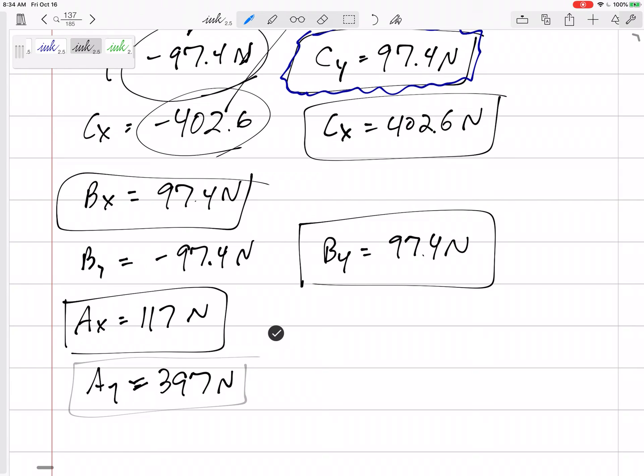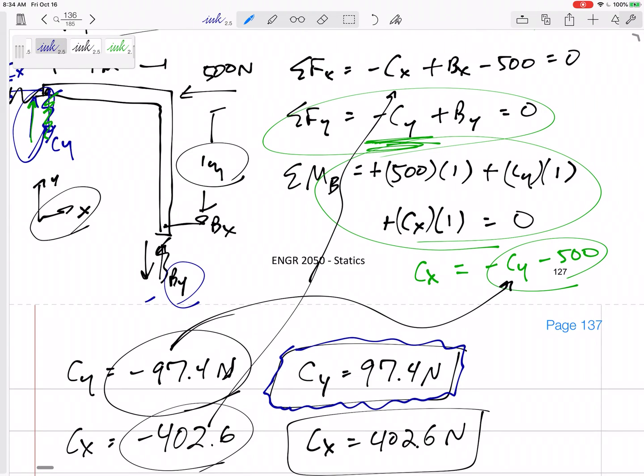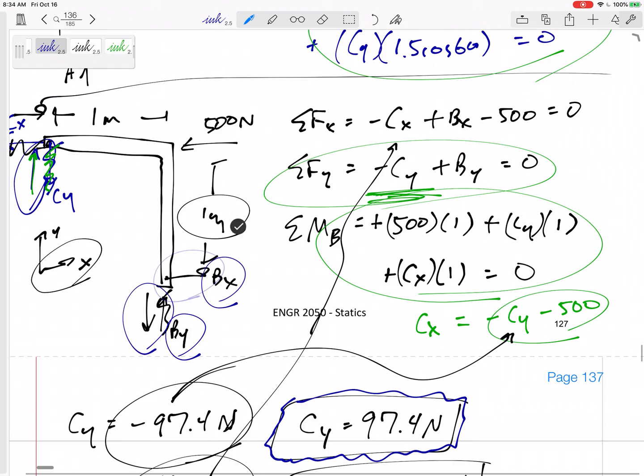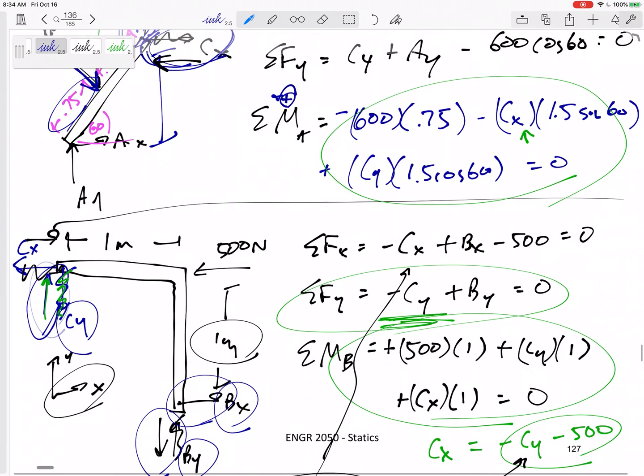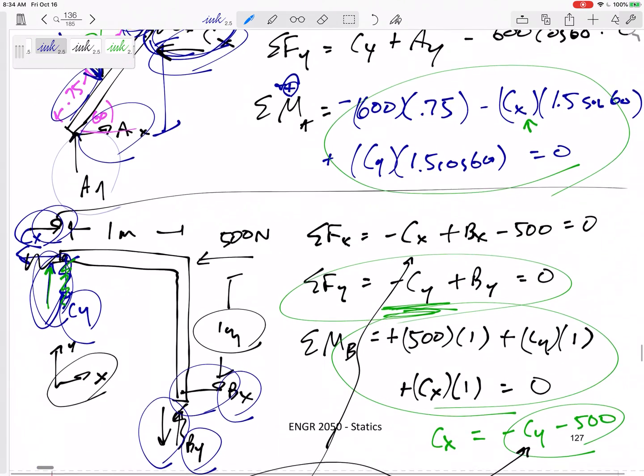And so I'm looking for these things boxed in, and then I'm going back to your free body diagram to see was BY that way? Was BX that way? CY should be that way. CX should be that way. And then on here, you got to draw the correct direction on all your free body diagrams.